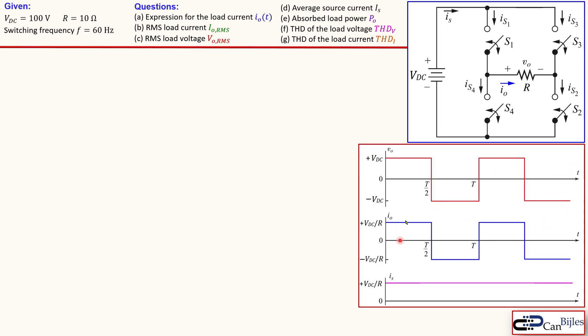The load current does have the same form, only the value will be of course divided by the resistor. So that will be then VDC over R for the maximum value and then minus VDC over R for the minimum value. The source current is always VDC over R for this case, because it is always in the same direction. So that doesn't change in the polarity like we have for the current of the load.